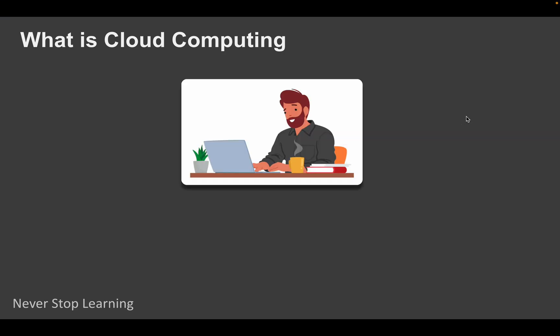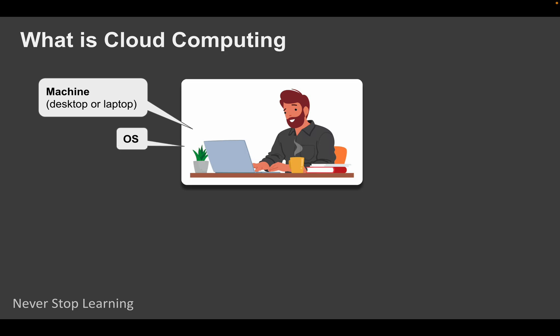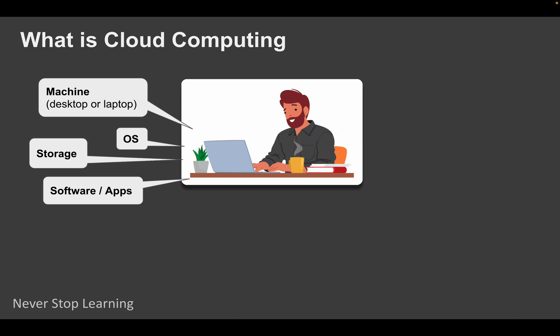Let us imagine you are working on your computer, on your laptop or desktop at your home. To do any work you need some resources — some software and hardware resources and some infrastructure. You need a machine, an operating system running on that machine, some storage so you can store and save your work, and some software applications to work with. Even if you are creating new applications, you still need some platforms and applications to work with.